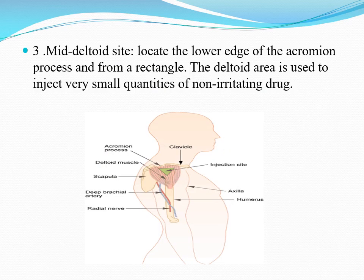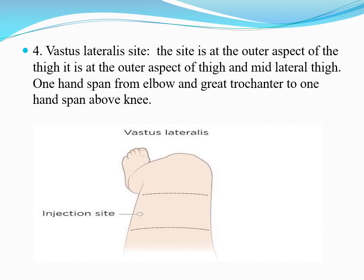3. Mid-deltoid site — locate the lower edge of the acromion process and form a rectangle. The deltoid area is used to inject very small quantities of non-irritating drug. 4. Vastus lateralis site — the site is at the outer aspect of the thigh, one hand span from the greater trochanter to one hand span above the knee.